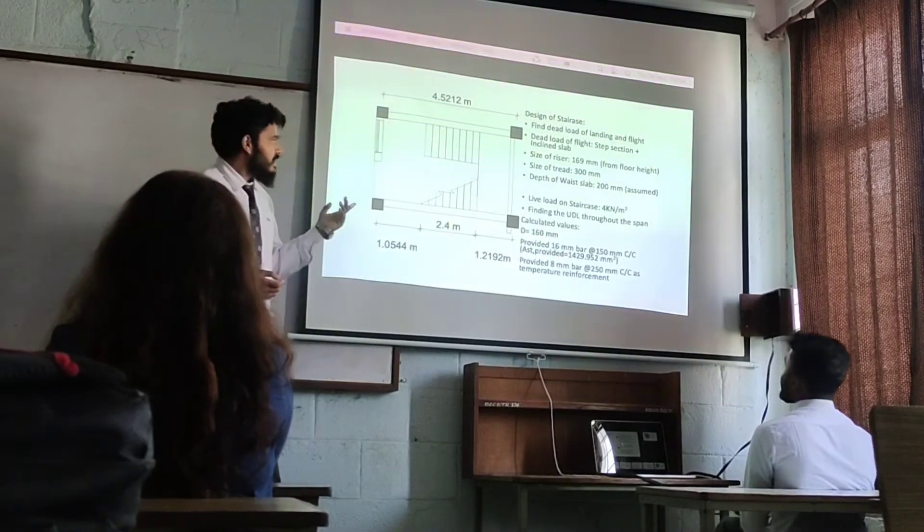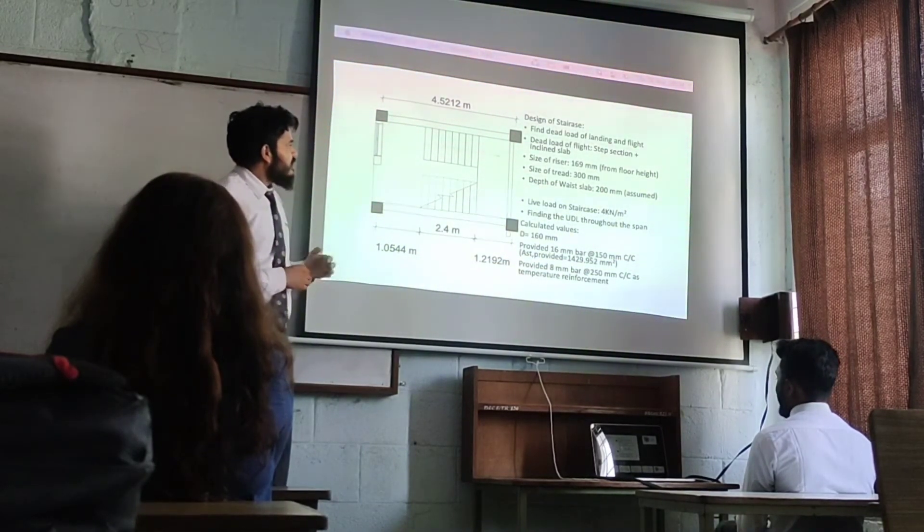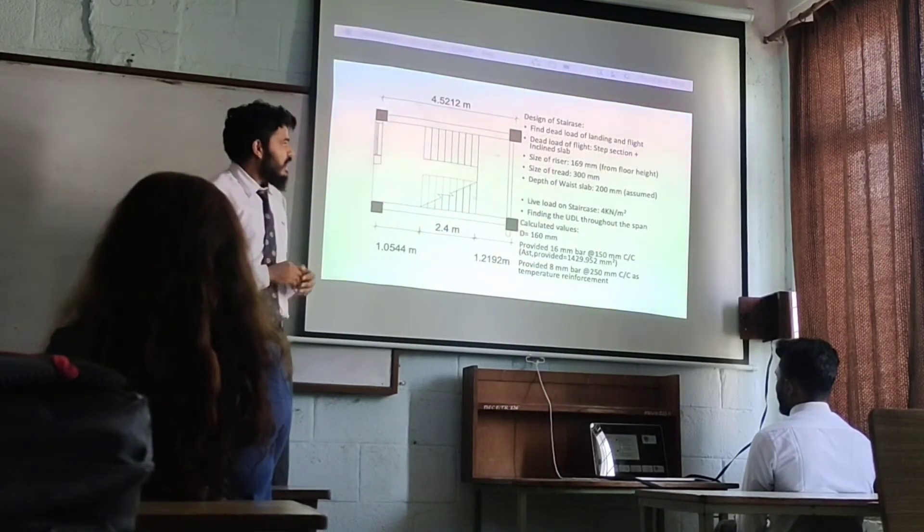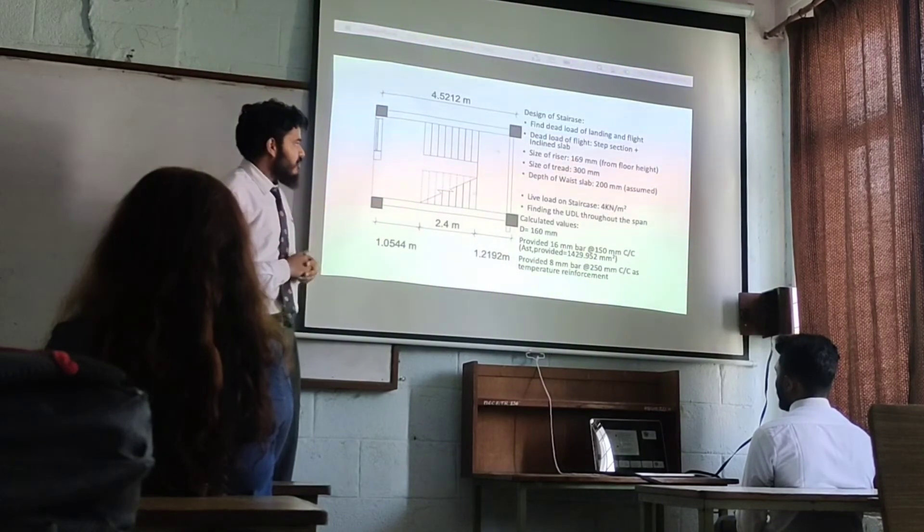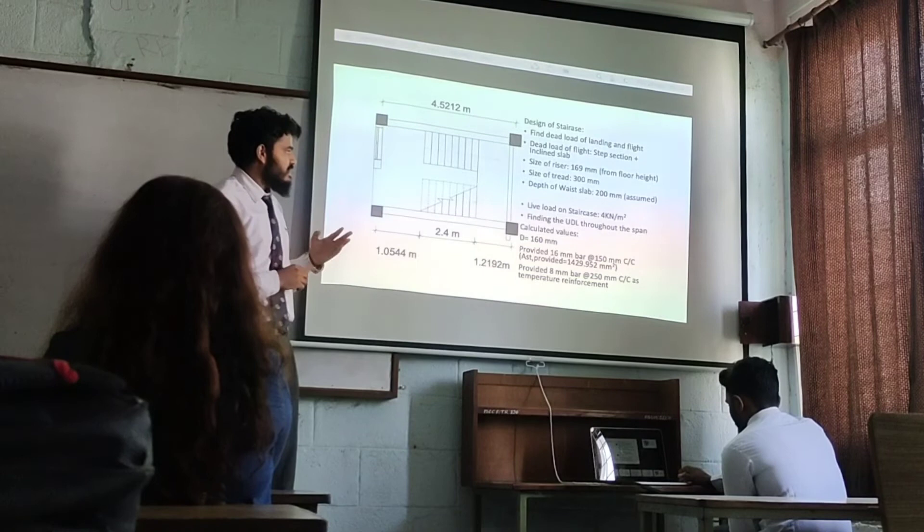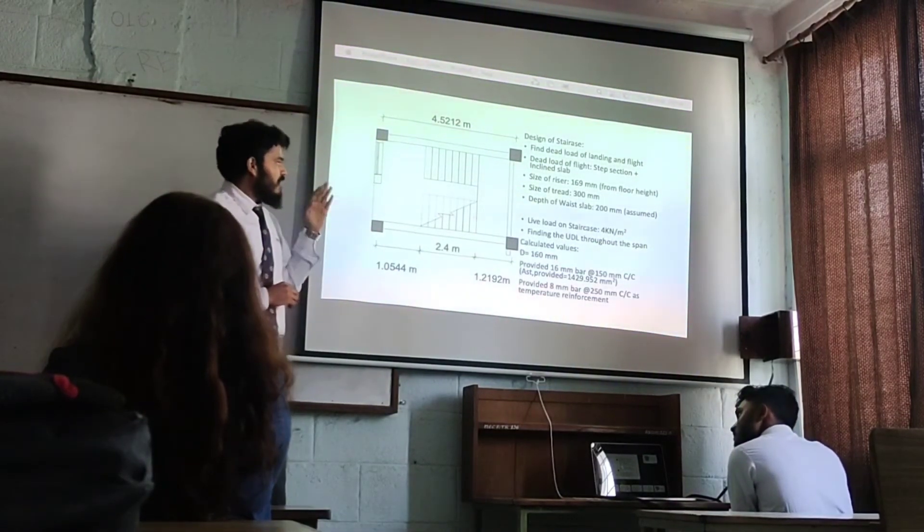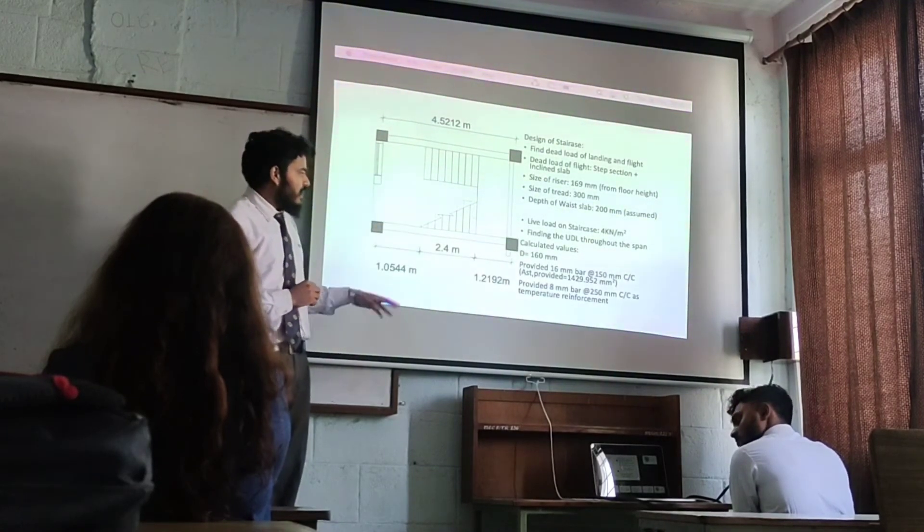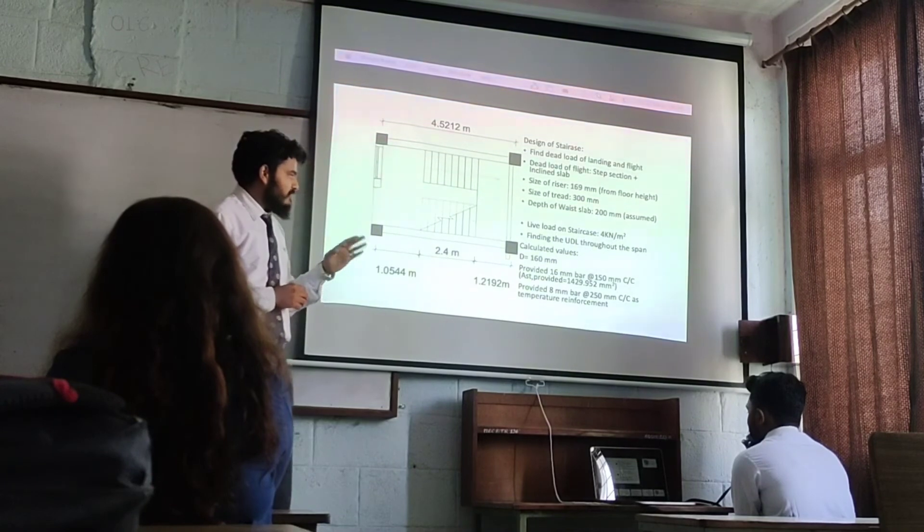We have also calculated the design of the staircase. The effective length of our staircase is 4.5 meters. For the design of staircase, we calculated the dead load of landing and flight separately in waist section and tread section, and added them. Size of the riser is 169 mm, adopted from dividing floor rise by number of risers. The depth of the waist slab is taken as 2 elements. Live load on the staircase is taken from IS code. We calculated the overall depth of the slab as 160 mm and provided 6 mm bar at 150 mm center to center for main bar and 8 mm bar at 150 mm center to center for distribution bar.